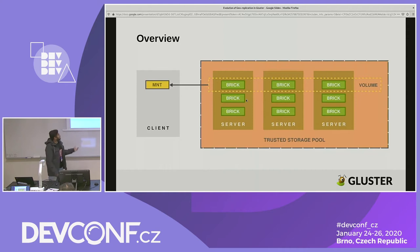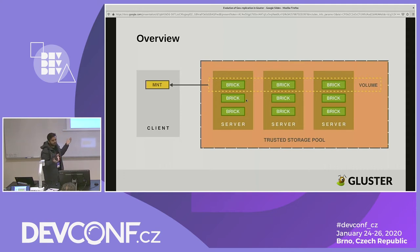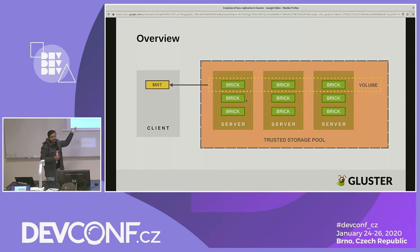As you can see in this diagram, there can be a number of servers which form a trusted storage pool, and within the servers you can have any number of bricks as per the server's capacity. A volume is a collection of bricks from various servers — it can be within a server, between servers, any number of bricks. Once the volume is created, you mount it on a separate machine which will be the client where you do IOs.